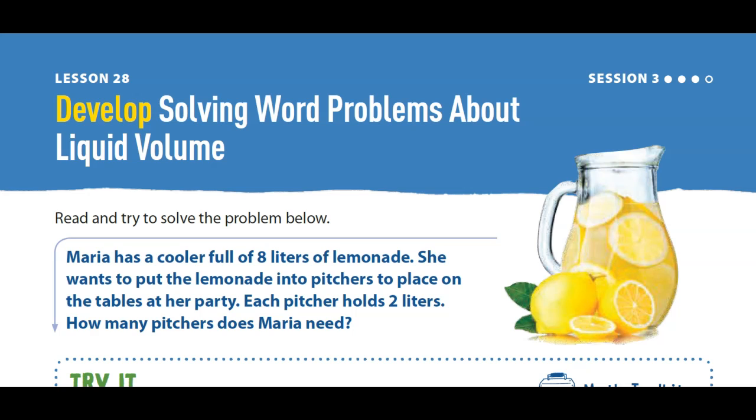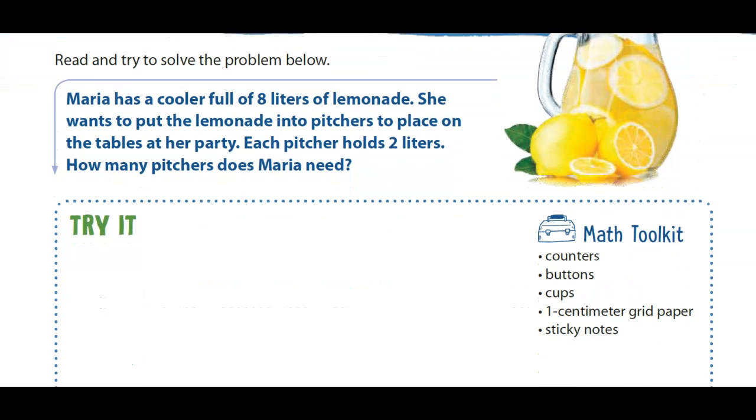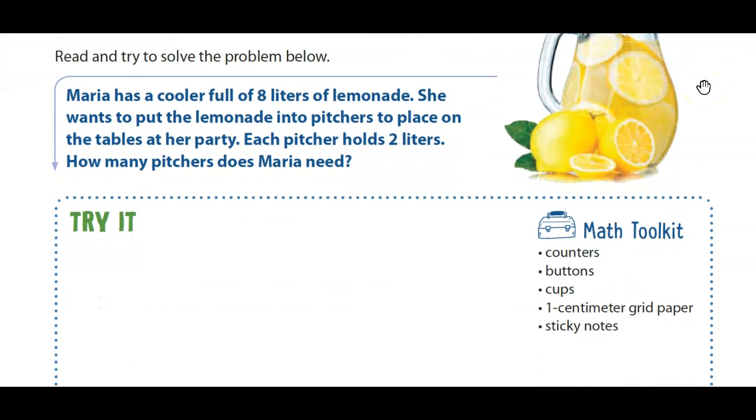In session 3 in lesson 28, it says Maria has a cooler of 8 liters of lemonade. She wants to put the lemonade into pitchers to place on the tables at her party. Each pitcher holds 2 liters.